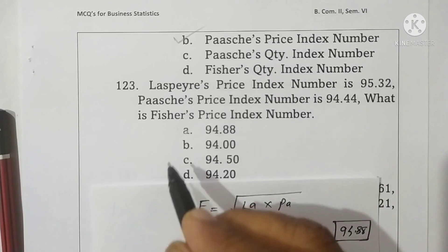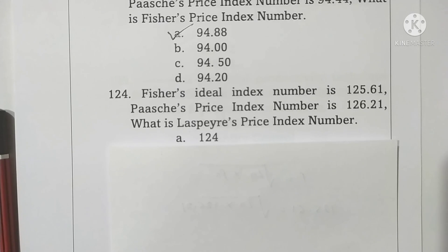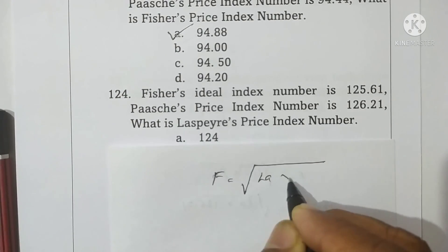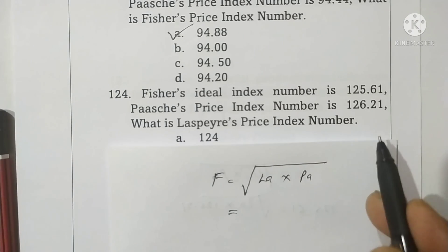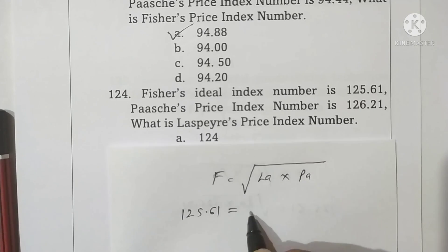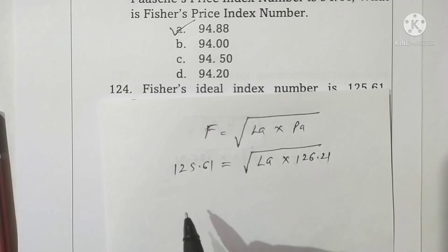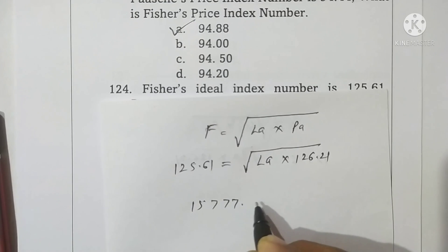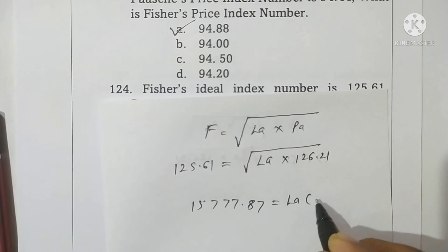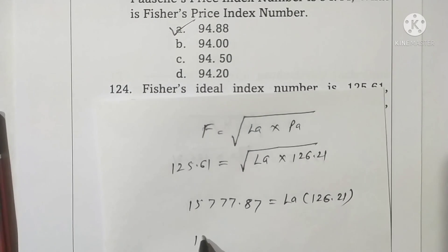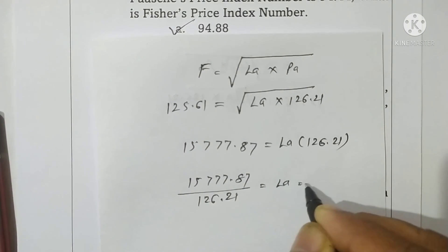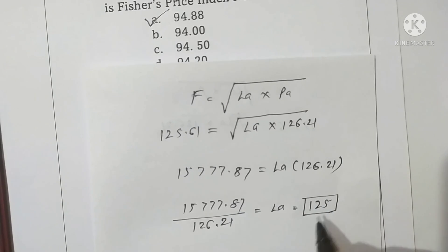Question 124: Fisher's index number is 125.61 and Paasche's price index number is 126.21. What is Laspeyre's price index number? Fisher's price index number equals the square root of Laspeyre's into Paasche's. Squaring both sides: 125.61 squared equals 15771.87, equals Laspeyre's multiplied by 126.21. Dividing: 15771.87 divided by 126.21 gives Laspeyre's price index number as 125. Option B is correct.